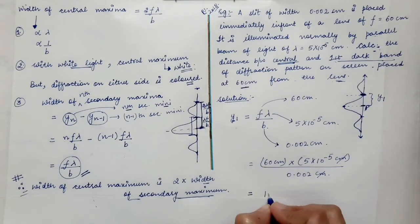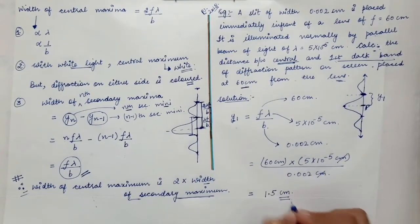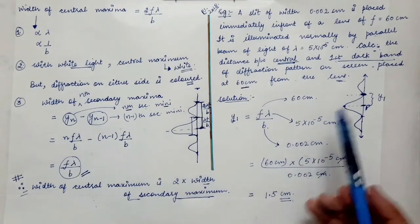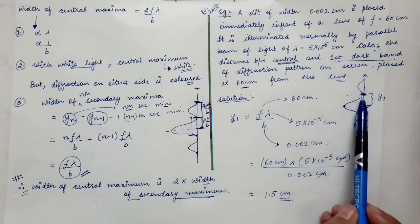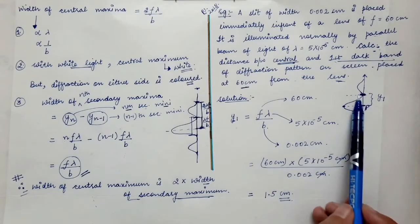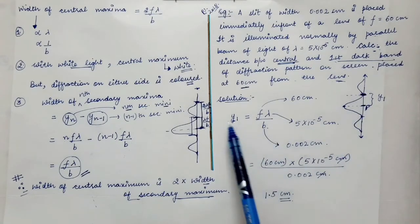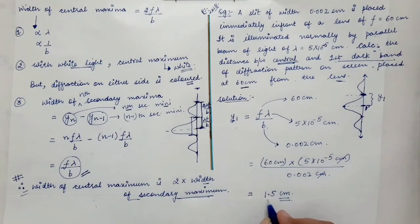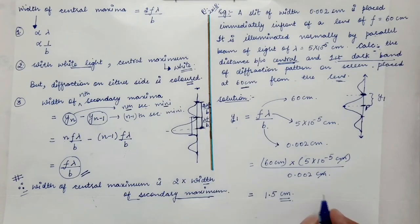The width of the central maximum can also be found as twice of y1 = 2 × 1.5 cm = 3 cm.